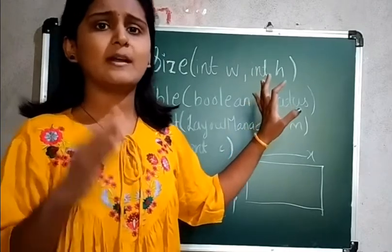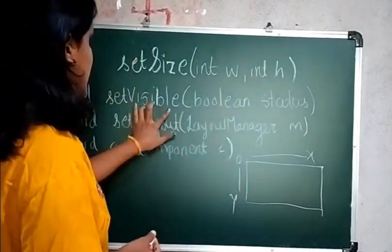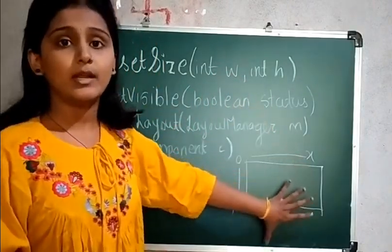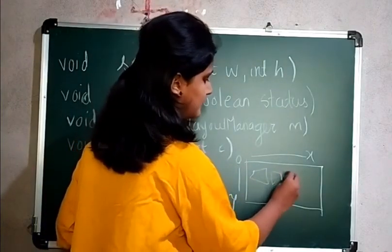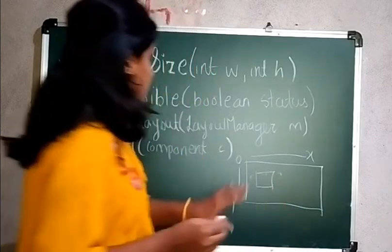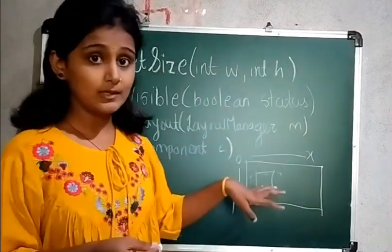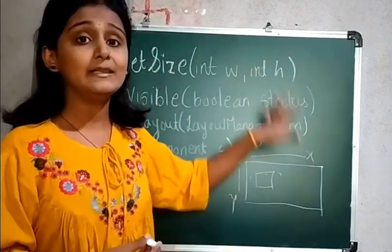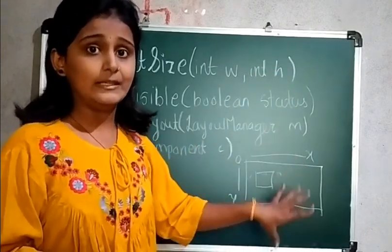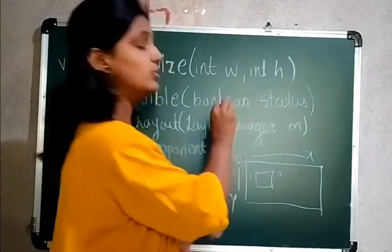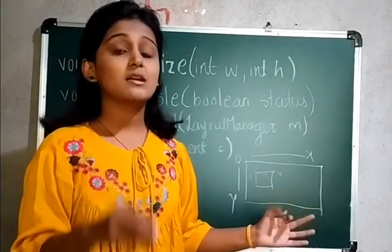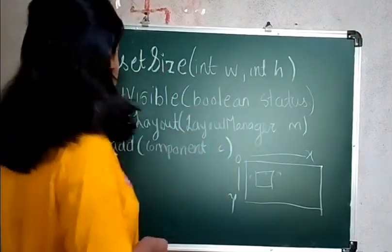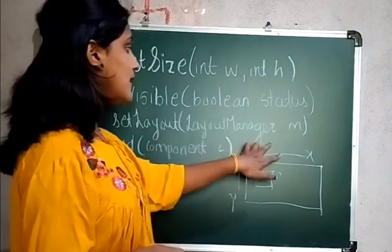The next one is setVisible(boolean status). This method is very important. You will have a frame and some components as per the requirement. Whenever you take a component it should be visible to us. For that purpose, setVisible will make the components you have programmed visible. If status is true it will be visible; if false it will not be visible. By default it is false, so you must use this setVisible method.